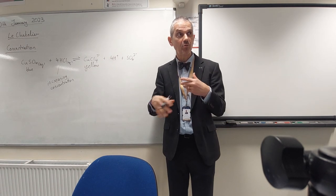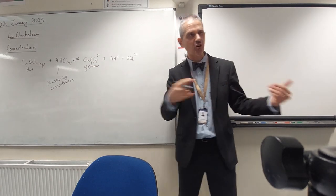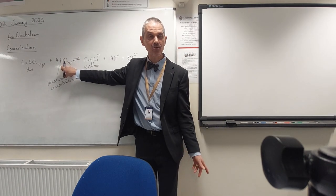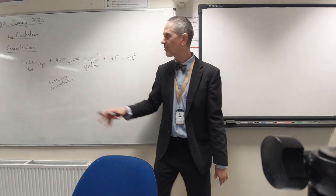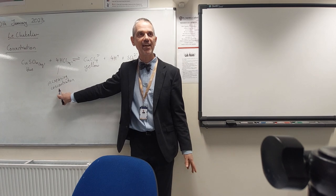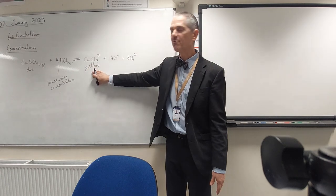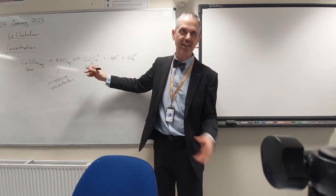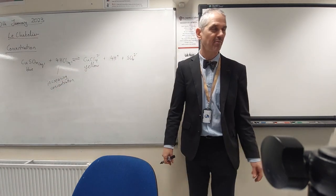So Le Chatelier says we try and minimize the change. If I make a change, let's try and undo it. If I add more HCl to the equilibrium, the equilibrium tries to undo that. In other words, it'll have to reduce the added HCl. So to reduce the added HCl, the equilibrium shifts to the right, makes more yellow stuff and less blue stuff. So the reaction goes yellow. And that will reduce the total amount of HCl.